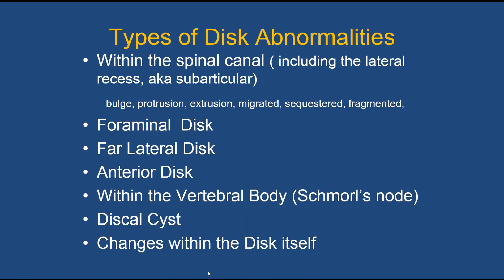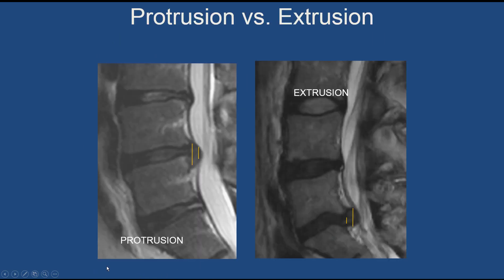The types of disc abnormalities within the spinal canal include bulges, protrusions, extrusions, migrated discs, sequestered discs, and fragmented discs. There are also variants: foraminal discs, far lateral discs, anterior discs, discs within the vertebral bodies, discal cysts, and changes within the disc itself. These are all important categories to recognize.